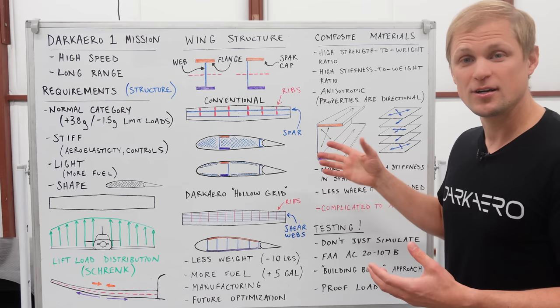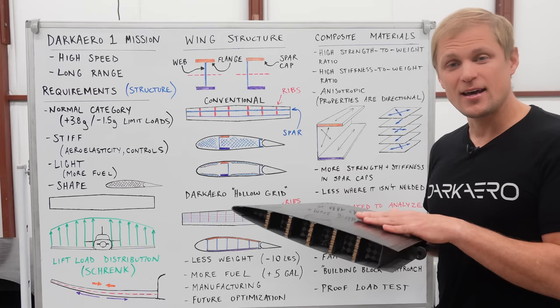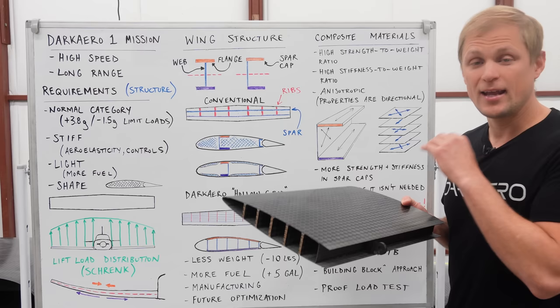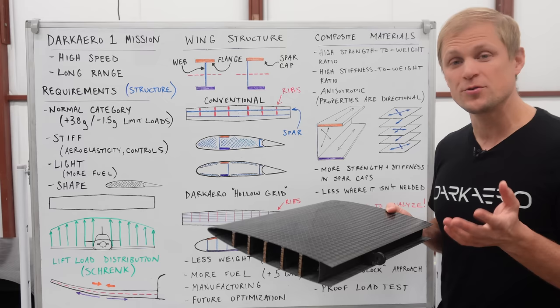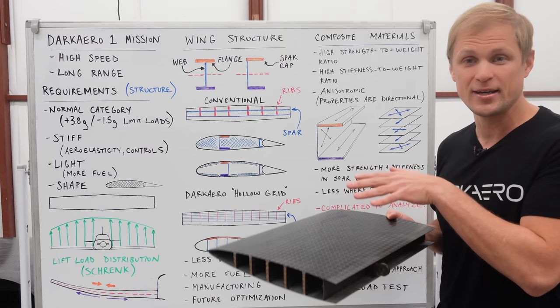We can also create laminates that are optimized for the loads that they're subjected to. So in our wing skins we can add unidirectional fibers oriented in the spanwise direction to better resist the tensile and compressive loads that appear in the wing skins when the wing is subjected to bending loads from lift loads.